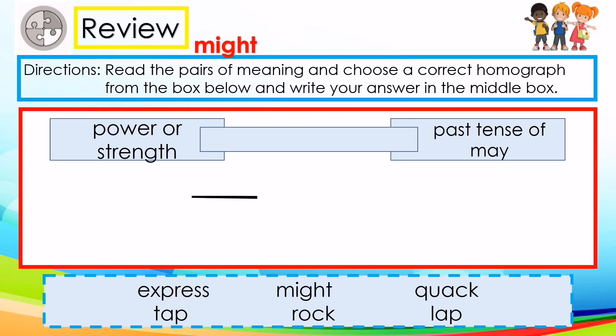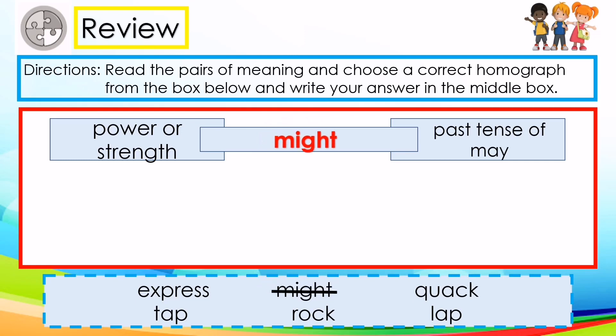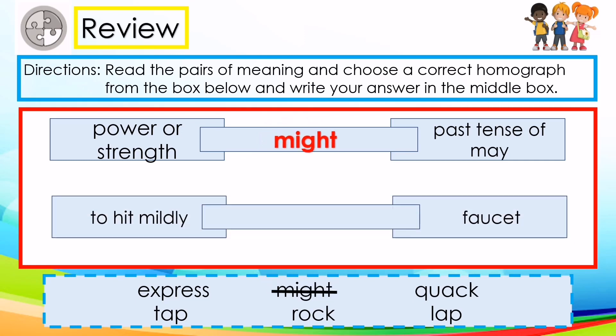This means 'power or strength' and another meaning is 'the past tense of may.' The correct answer is might. Next, this means 'to heat mildly' and the next one is 'a faucet.' The correct answer is tap.